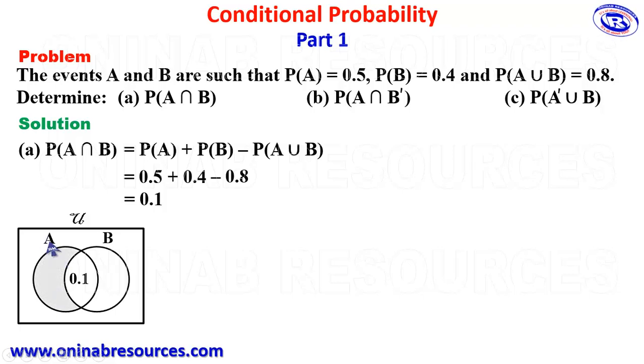We are now going to look for P of A intersection B prime. To do that, we are going to take 0.1 away from P of A. And our P of A is 0.5 minus 0.1 giving us 0.4. So, we have 0.4 here. We go ahead to look for P of A prime intersection B. And to do that, we take away 0.1 from 0.4. So, that is 0.4 minus 0.1 giving us 0.3. So, that P of A prime intersection B gives 0.3.